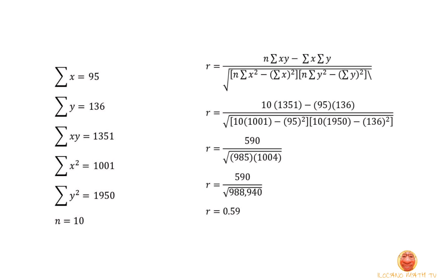So, now, we will use the scientific calculator and perform this. 10 times 1351 minus 95 times 136, the answer is 590. And then, in the denominator, we'll get first the answer of the first bracket. 10 times 1001 minus 95 squared, the answer is 985. Then, the second bracket. 10 times 1950 minus 136 squared, the answer is 1004. Please do make sure that all the numbers that you type in scientific calculator is right, so we could avoid wrong answer. Now, we'll just multiply the two denominator, 985 times 1004 equal to 988,940. And then, we'll divide now 590 over the square root of 988,940. And the answer is 0.59.